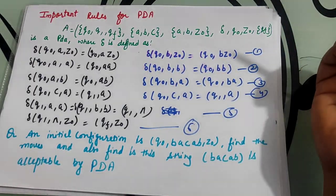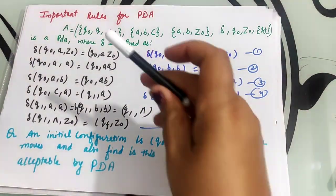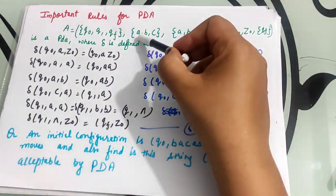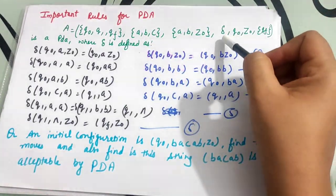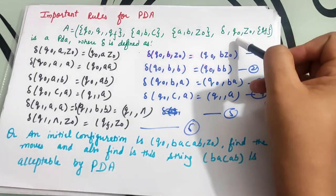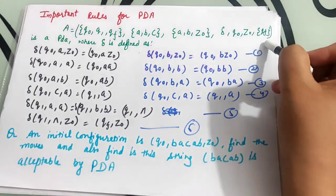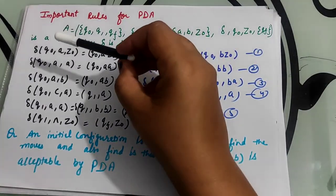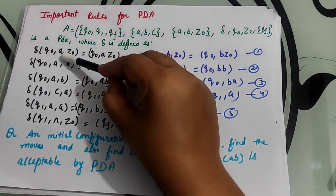In this case, there are three states used in pushdown automata: q0, q1, and qf. The terminal symbols are a, b, c, and this is the pushdown symbol. This is the transition function. q0 is the initial state, this is the initial symbol, this is the final state, and the transition function is defined according to this question.